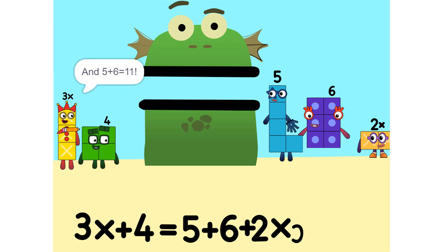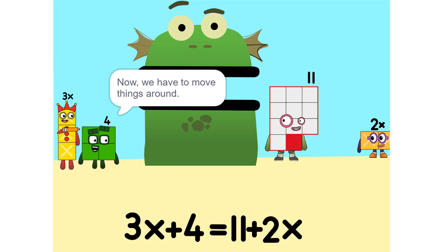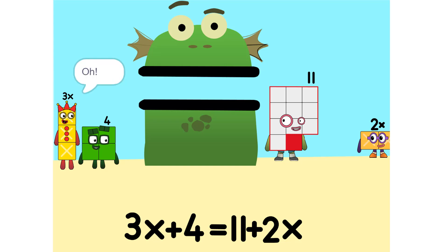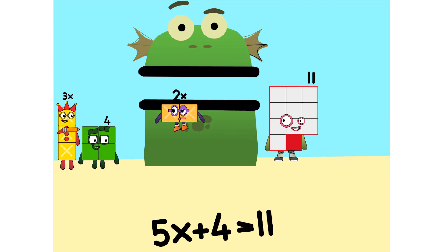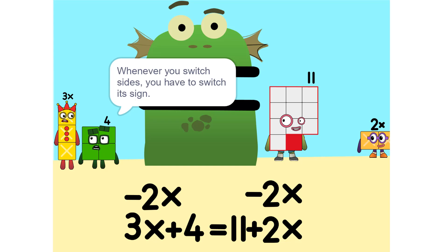And 5 plus 6 is 11. Now we have to move things around. We have to move this 2x to this side. So: 5x. Whenever you switch sides, you have to switch its sign. So if it's positive, it becomes negative, and vice versa.